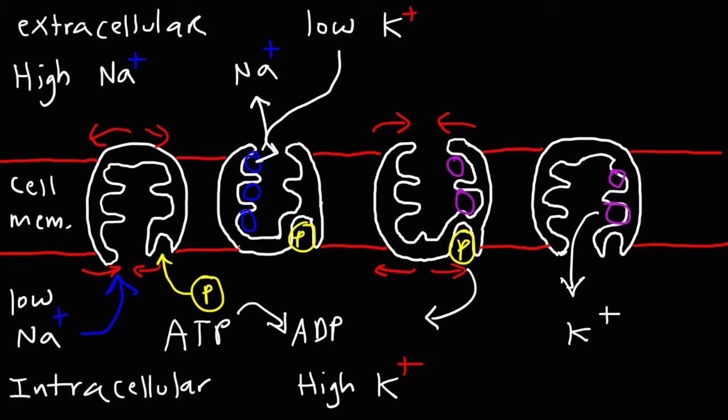At this point, the process is going to repeat itself. So the sodium ions that are inside of the cell — three of them — are going to go back into the sodium-potassium pump. And the phosphate group, which will come from ATP, will re-enter the pump as well, repeating the entire cycle.